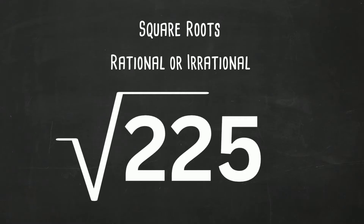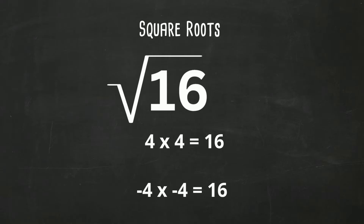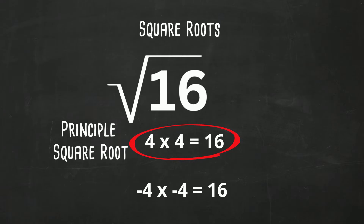Let's take a look at the square root of 16. It is a perfect square. 4 times 4 equals 16, but negative 4 times negative 4 also equals 16. The positive version, 4 times 4 equals 16, is called the principal square root. And since it's a perfect square, it is a rational number.